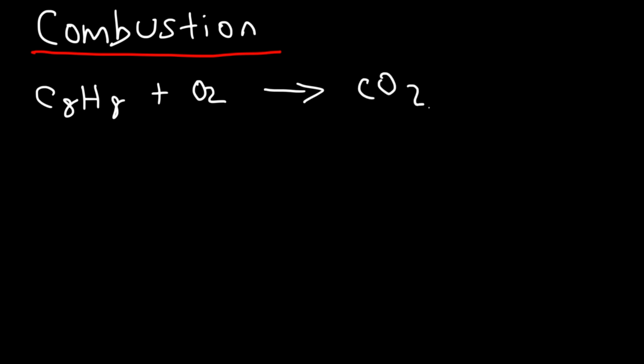Octane produces carbon dioxide and water when it reacts with air. CO2 is a gas. Water is a gas at high temperature — at normal temperatures it's a liquid, but because a combustion reaction generates a lot of heat, water is typically going to be in a vapor phase. This reaction generates a lot of heat and produces a lot of gas molecules, which expand at high temperature.